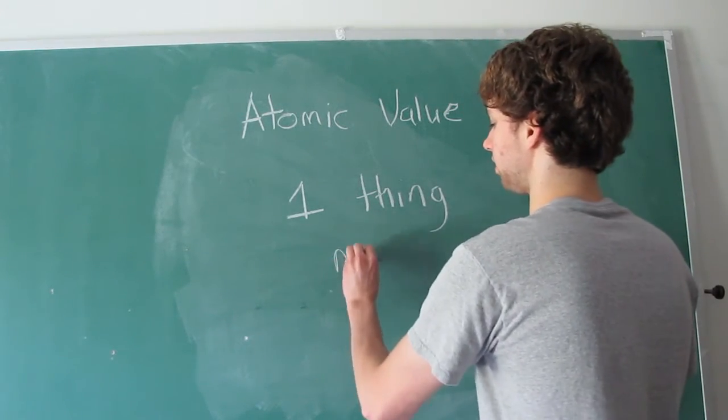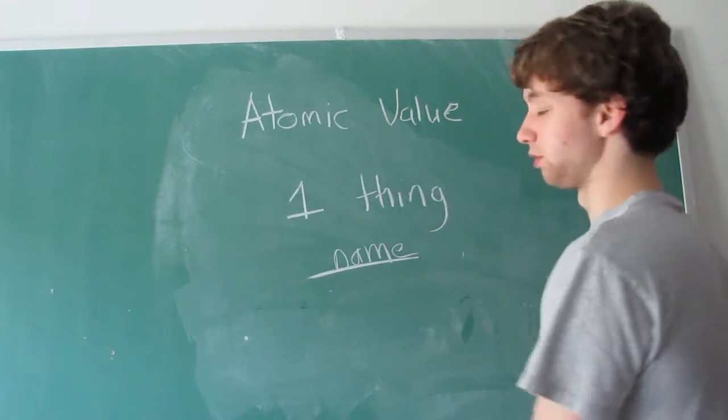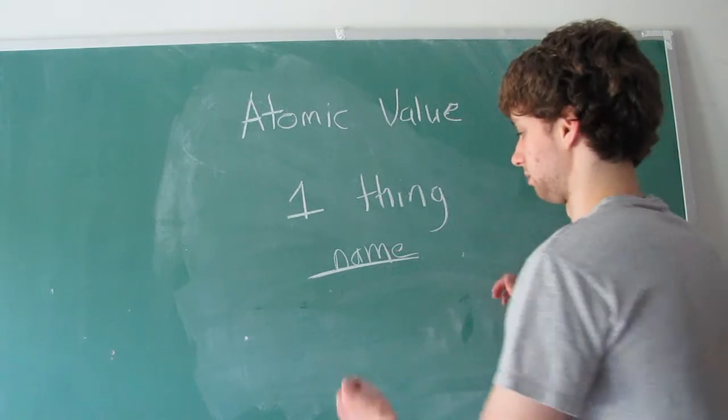We have a column name. Well, what does a name consist of? You can have a first name, middle name, and last name.